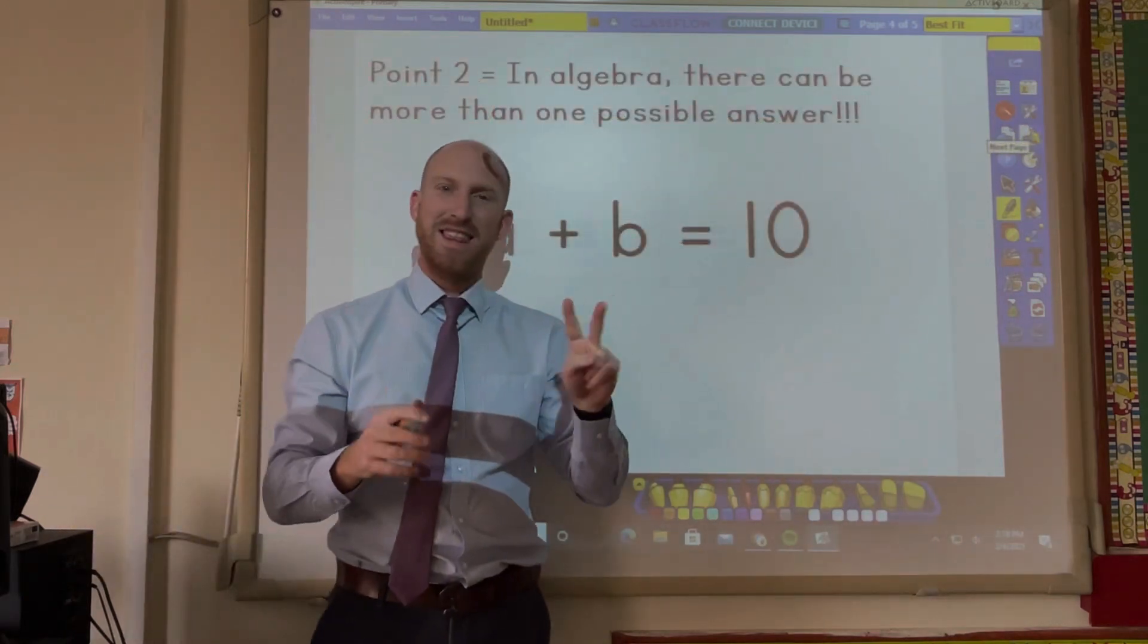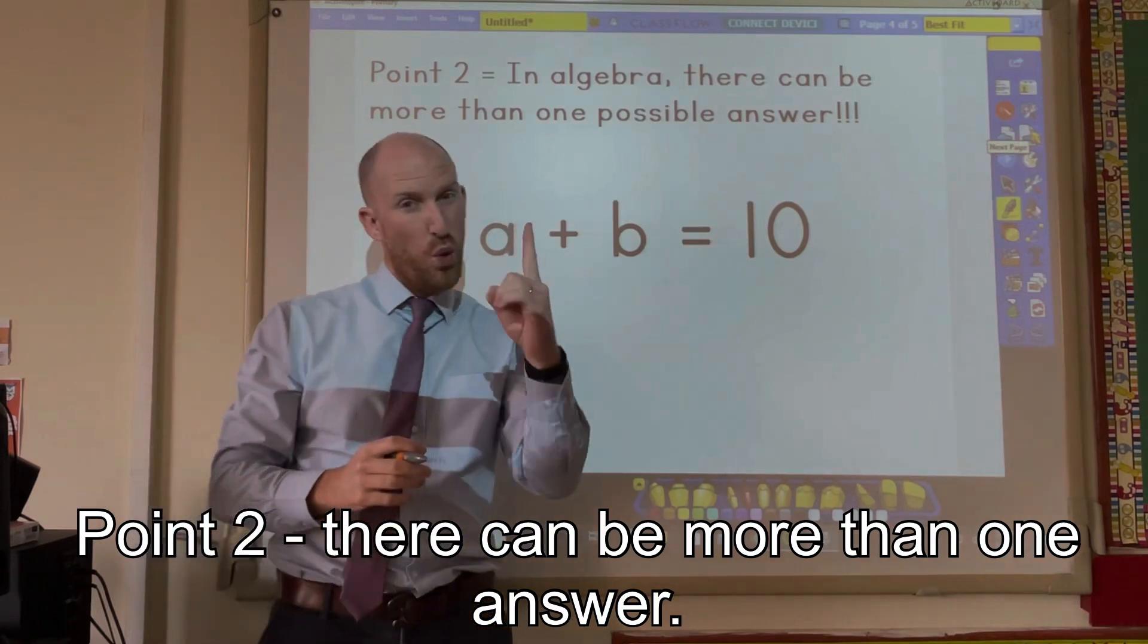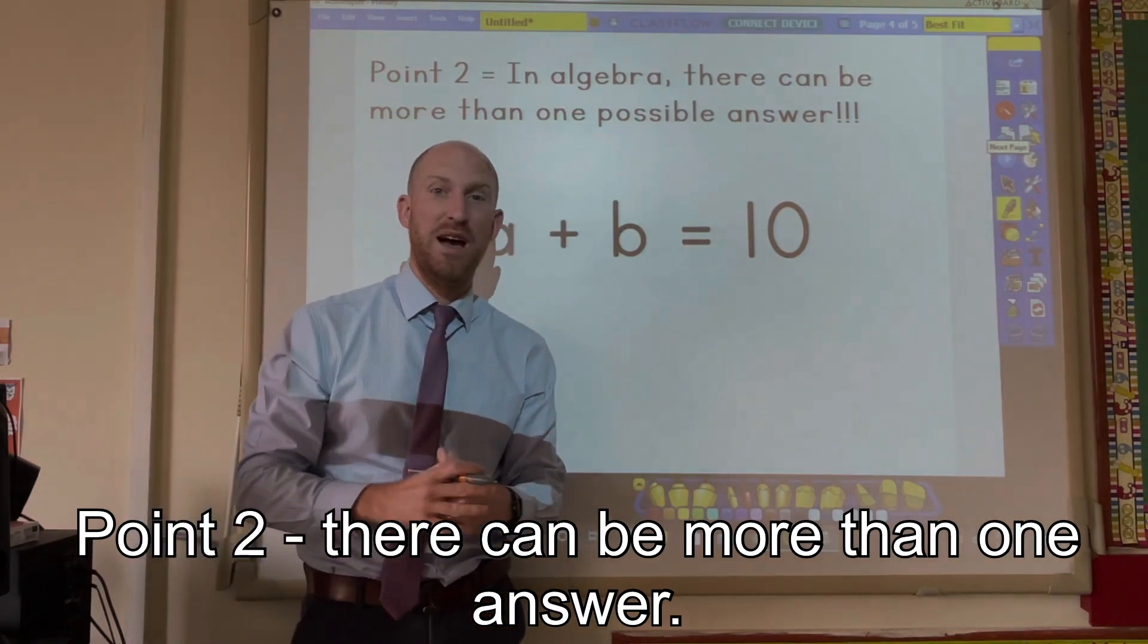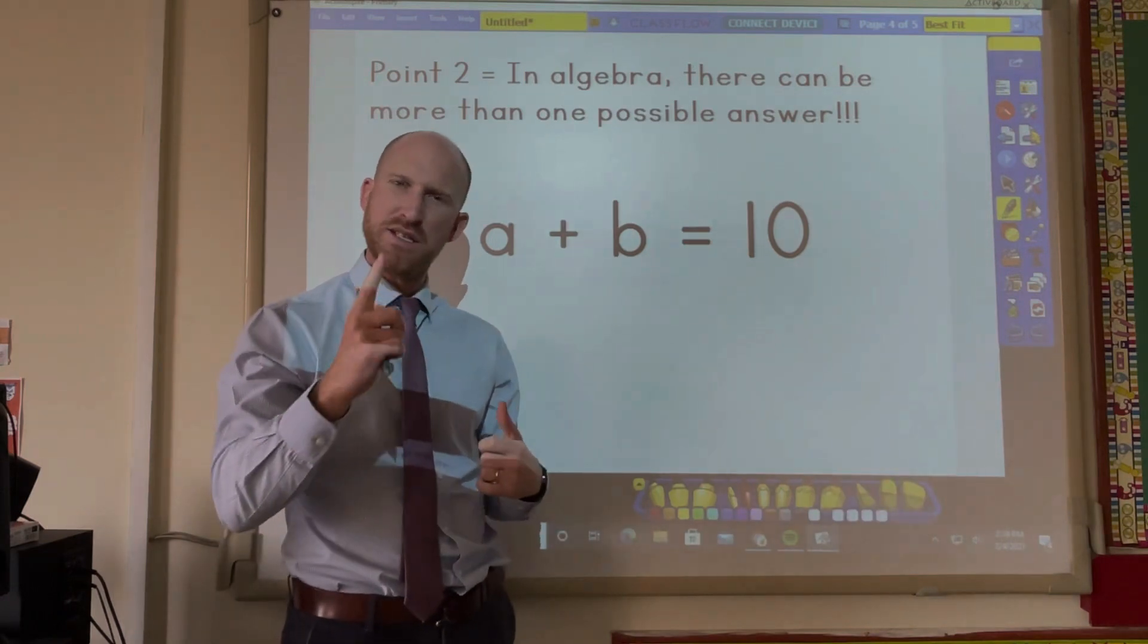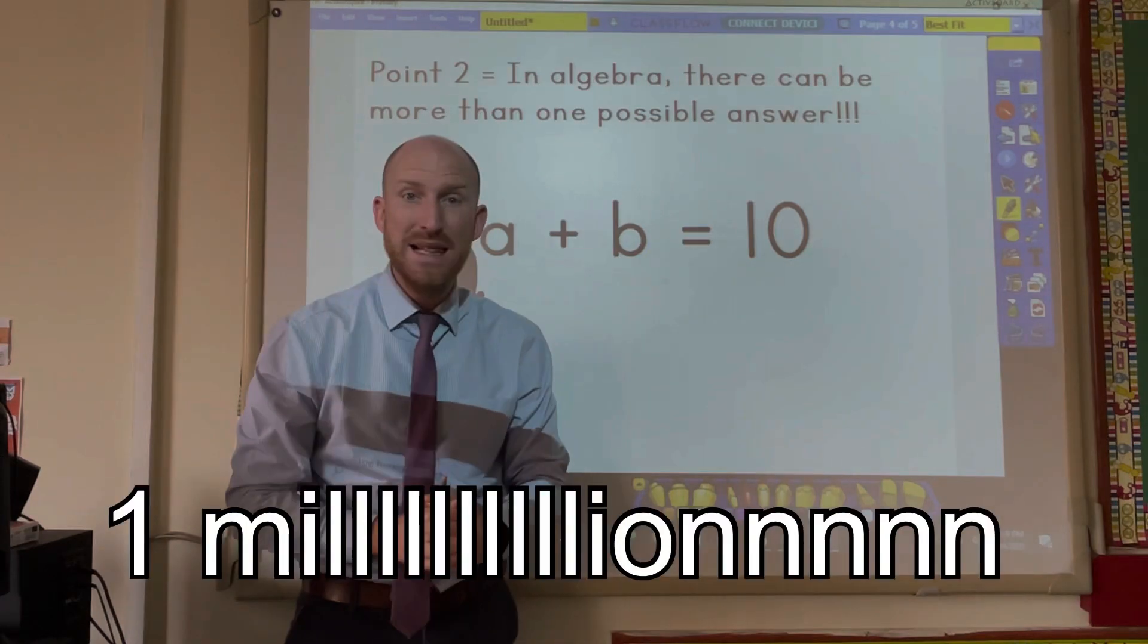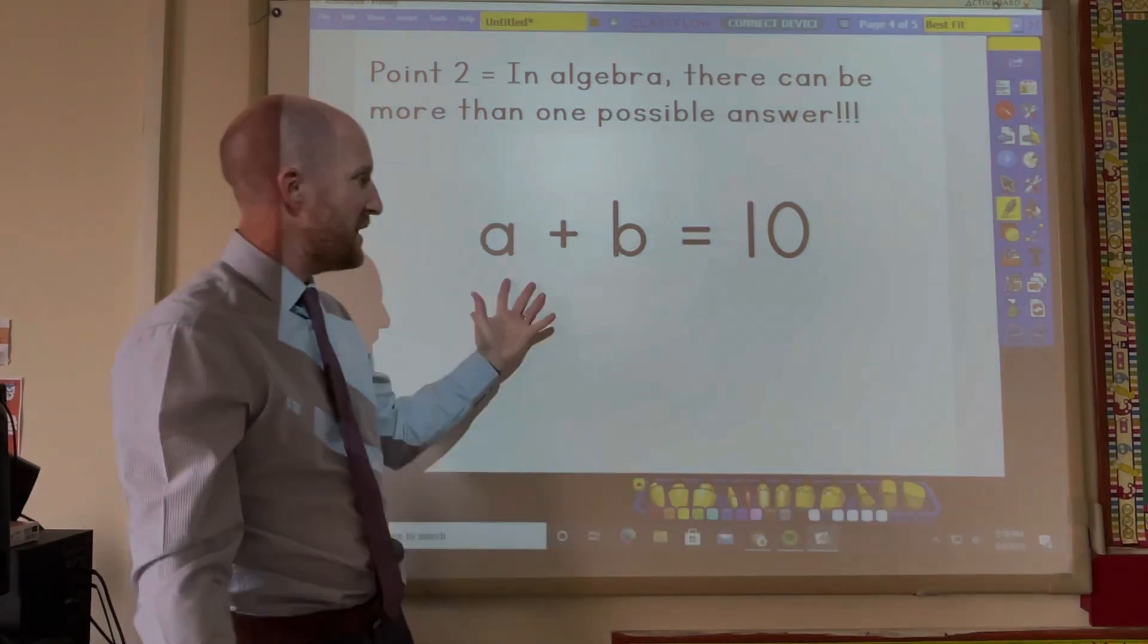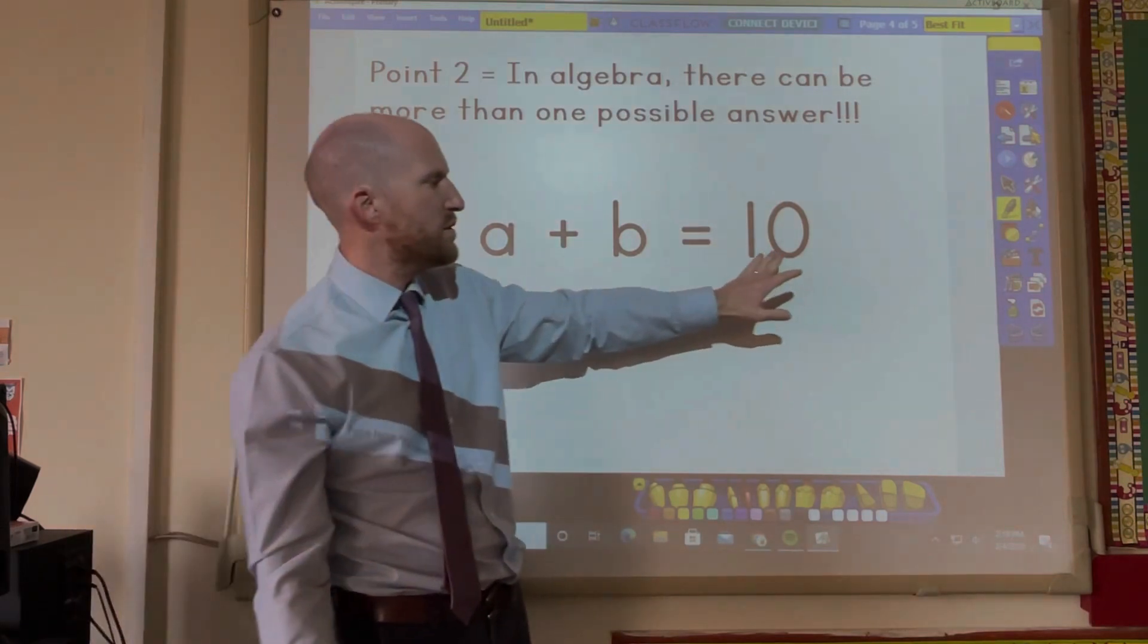In algebra the second thing that we need to understand is that there isn't just one answer sometimes. We're used to saying 5 plus 5 equals 10. There's only one answer. But in algebra sometimes we can have 2, 3, 4, or maybe a million different answers. Now look at this question here. A plus B equals 10.